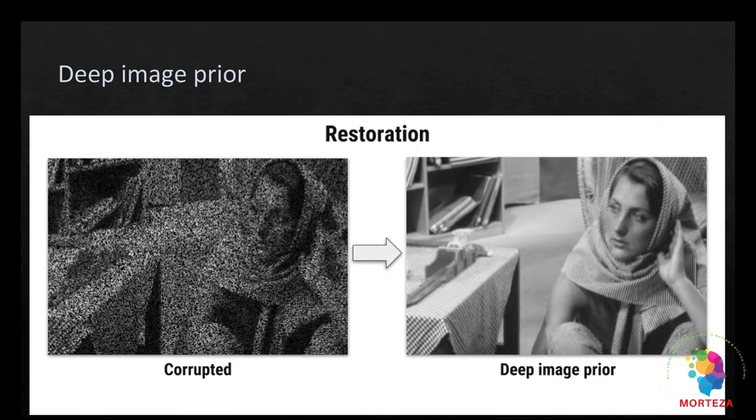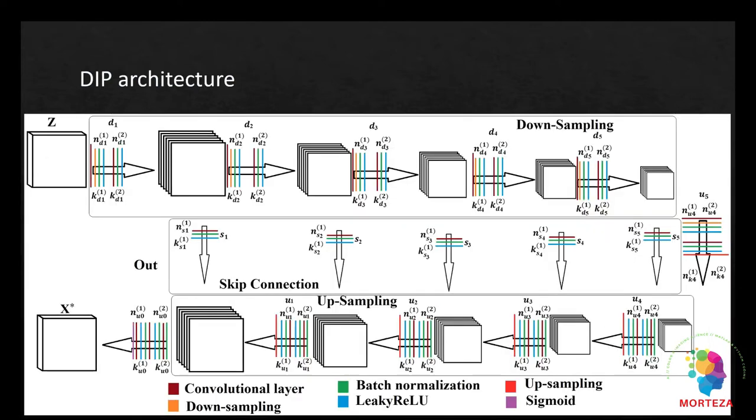The left image, which is the noisy image, that's the only image that the network has used to get to the right image.